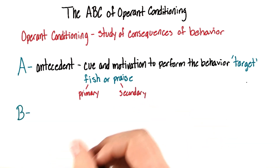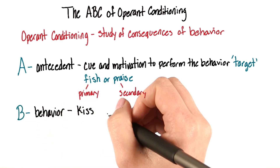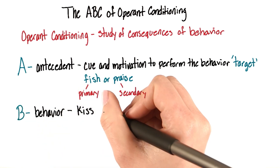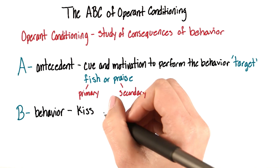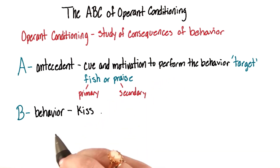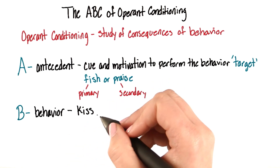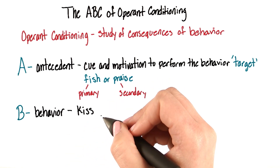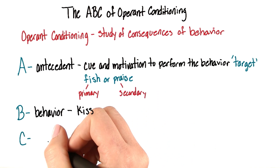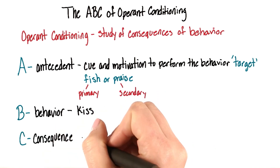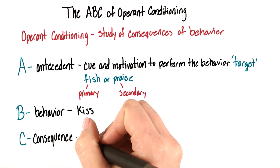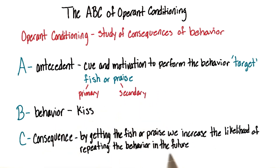Next we have B, which as you might have guessed, is behavior. The behavior you saw in the first clip was a kiss from Saki the sea lion. And finally, C, which is the consequence.